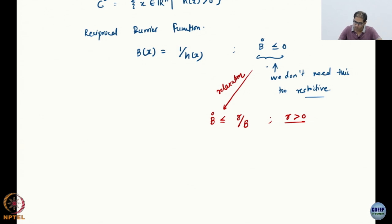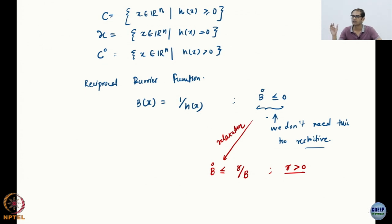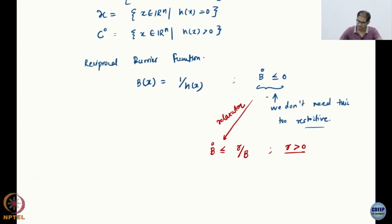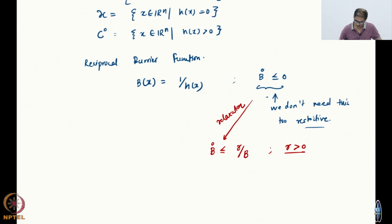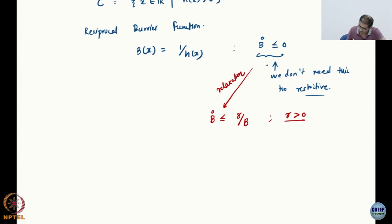You will start getting smaller and smaller sets, and the smaller set will become invariant. You will not end up exploring the larger set at all because of this condition. This is a little bit restrictive, and this happened because we took V_dot ≤ 0. That condition is apparently not required — this is what some of the research has been. Apparently, all you need — this is the relaxation — is that B_dot is less than or equal to γ over B, where γ is some positive constant.